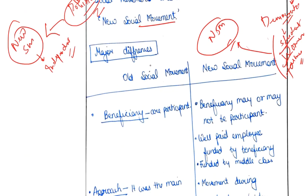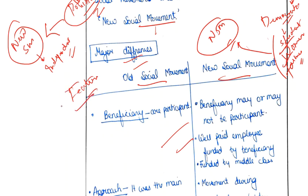The question does not explicitly ask for the difference between old and new social movements, so you can write about the features of new social movements rather than framing them as differences. You can make different sections such as emergence, then features.